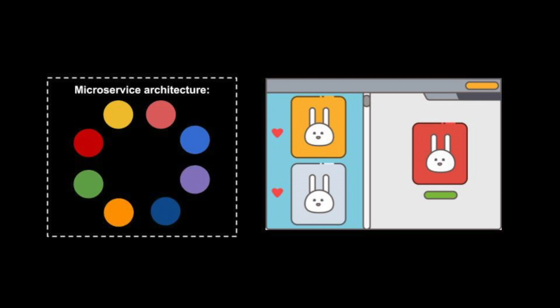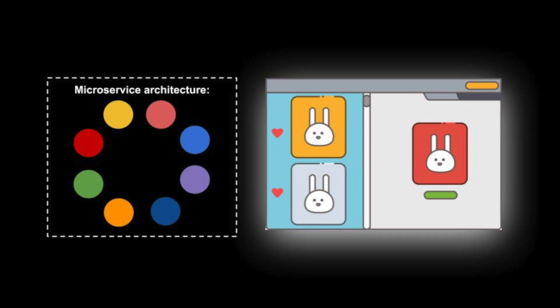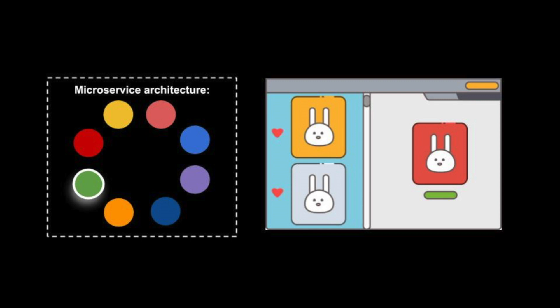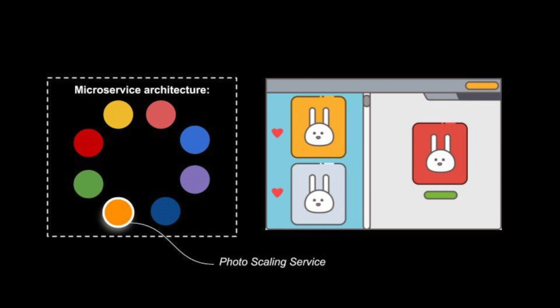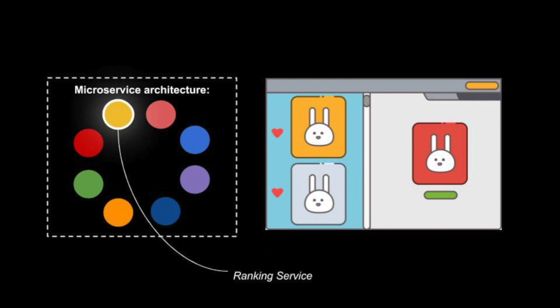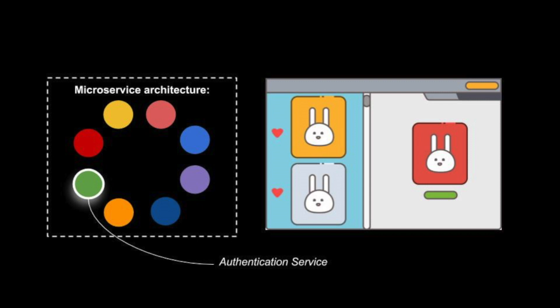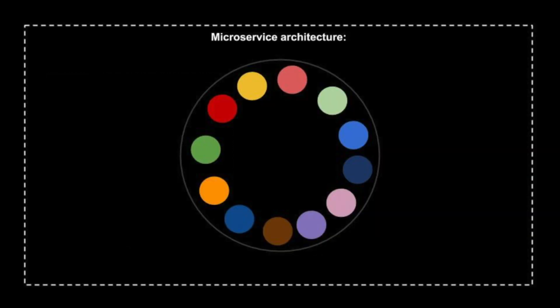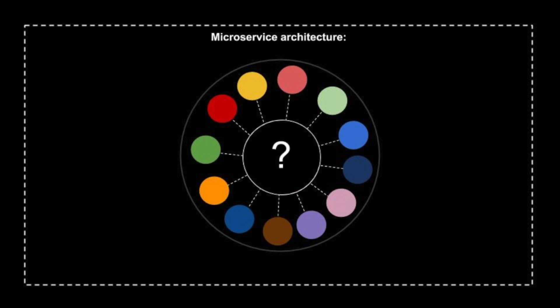Now imagine that I choose a microservice architecture instead. The application is divided into two or more small services where each microservice is developed separately. The finished application is the sum of its microservices, with a front-end handling user interactions, just like the monolithic application. Unlike a highly coupled system, however, the rest of the app is divided into specific services — one for photo scaling, another for ranking of photos, and a third for authentication and so on. In order for this to work, our microservices need a way to communicate with each other.